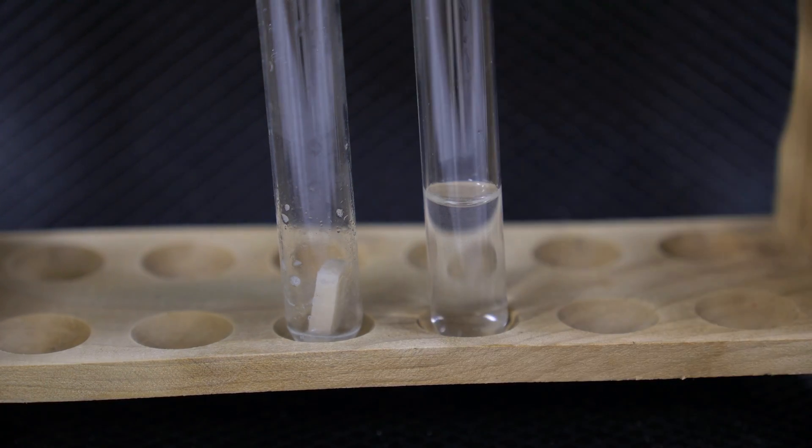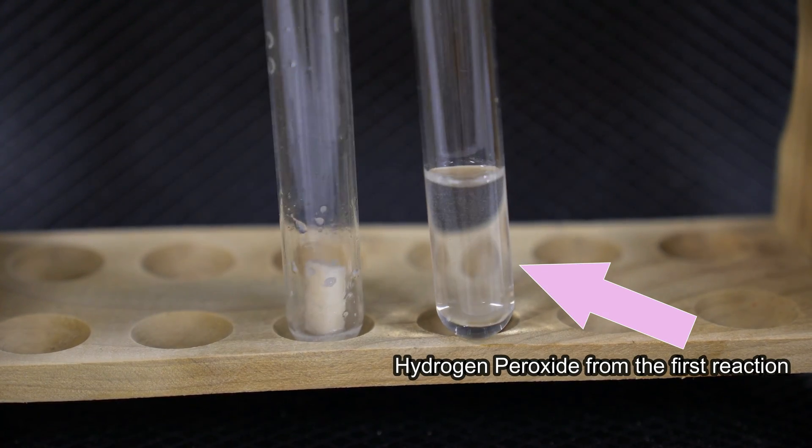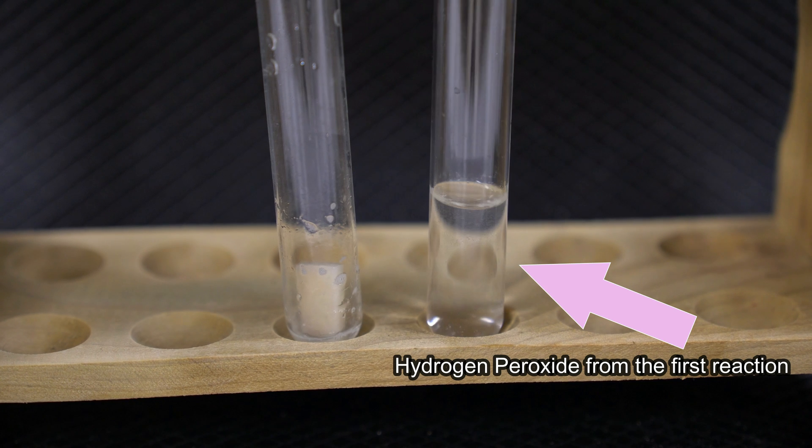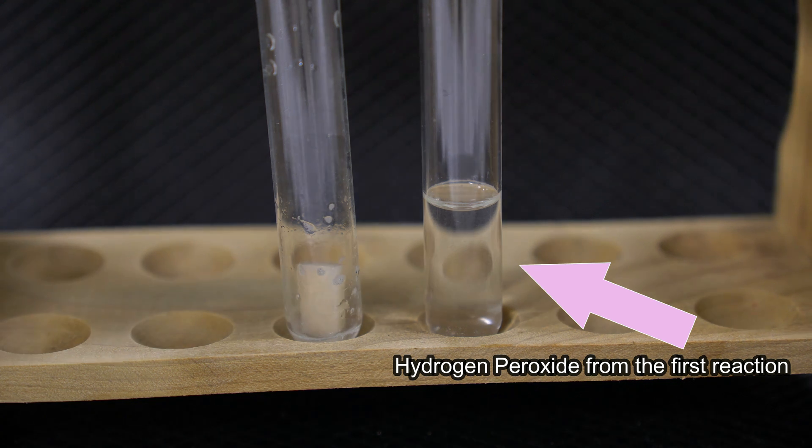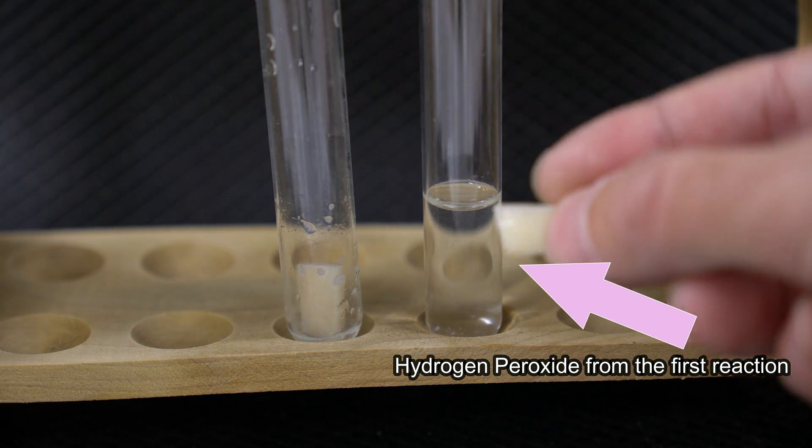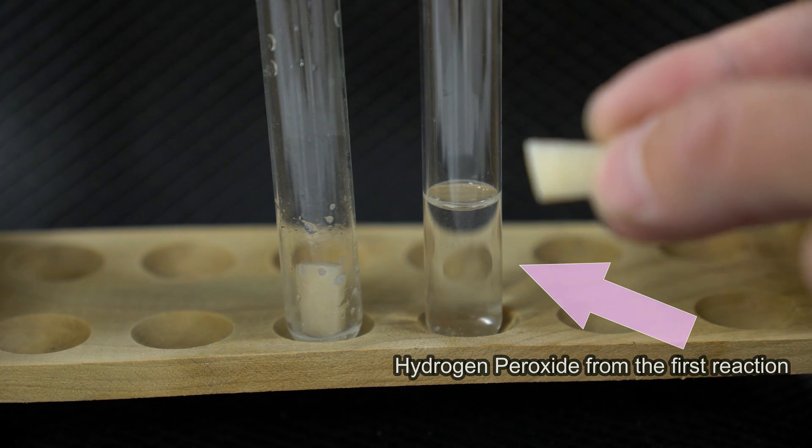Okay, so now I've got the liquid poured off from the first test tube into the second. The question now asks, what would happen if I added another piece of potato? I've cut a fresh piece of potato of similar size, similar surface area. We're going to add it to the test tube and see what happens.